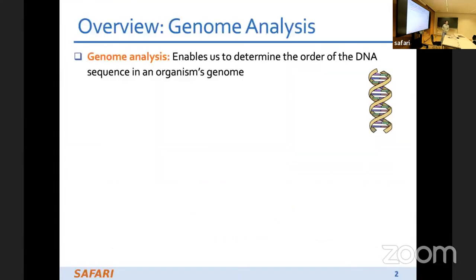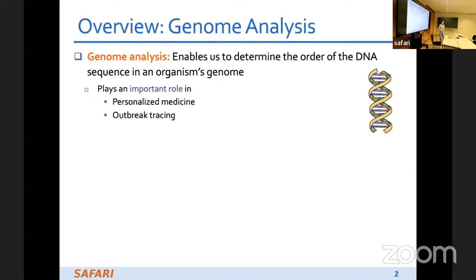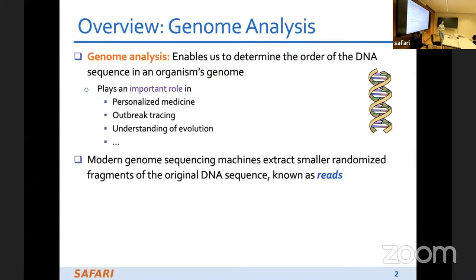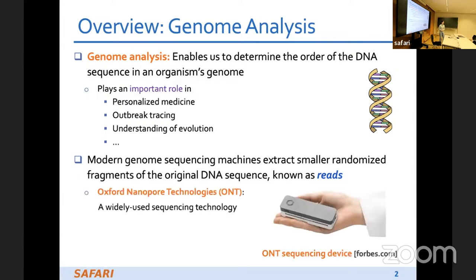First I want to give an overview of the background and motivations of our work. Genome analysis enables us to determine the order of DNA sequences in an organism's genome, and it plays an important role in personalized medicine, outbreak tracing, and understanding evolution. Modern genome sequencing machines extract small randomized fragments of the original DNA sequence, known as reads. Here is an example of a device from Oxford Nanopore Technologies, also known as ONT, which is widely used because it provides portable sequencing devices and has high throughput.